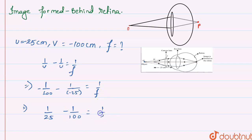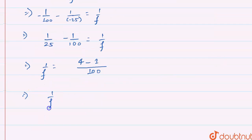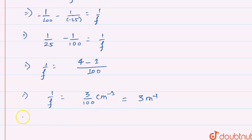The two negatives give a positive, so we get 1/25 minus 1/100 equals 1/f. This simplifies to 4/100 minus 1/100, giving 3/100 per centimeter. Converting to meters, we multiply by 100 to get 3 per meter. Therefore, the power equals 3 diopters. So a convex lens with a power of 3 diopters is required.